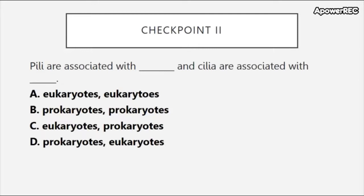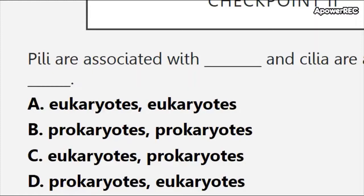Checkpoint two: pili are associated with blank, and cilia are associated with blank. The answer choices are: prokaryotes/eukaryotes, eukaryotes/prokaryotes, or prokaryotes/prokaryotes.